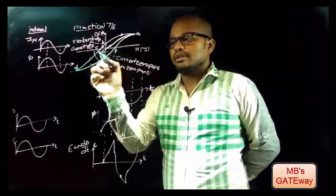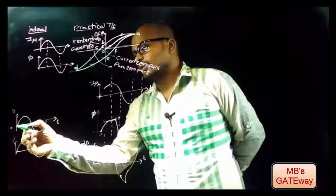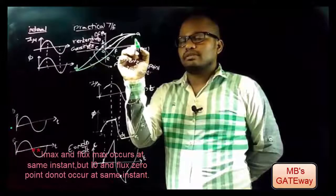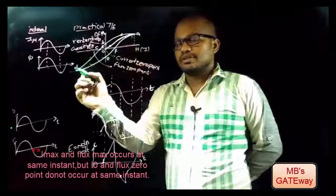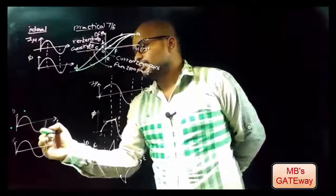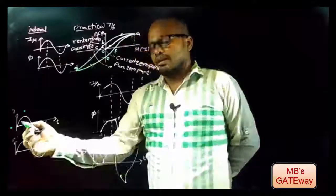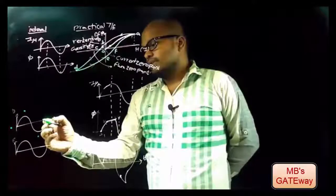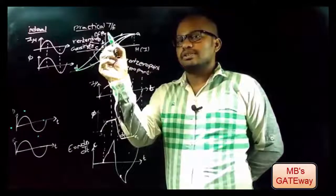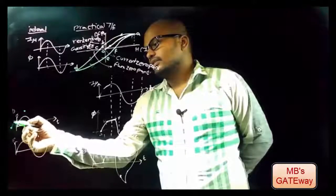Observing the BH curve, the current-zero point is leading and the flux-zero point is lagging. In a practical transformer, the maximum points φ_max and I_max occur at the same instant — similarly here φ_max and I_max are at the same instant. On the negative side, as current is leading, current will be zero at the corresponding leading point, and with increasing current I there is increasing flux.